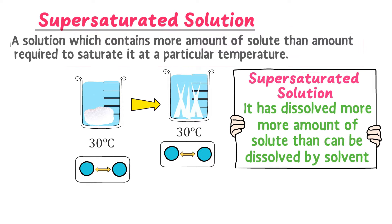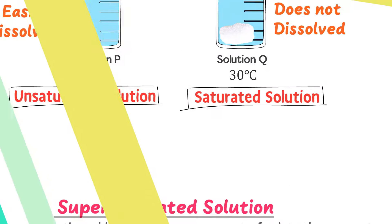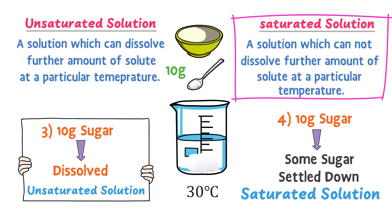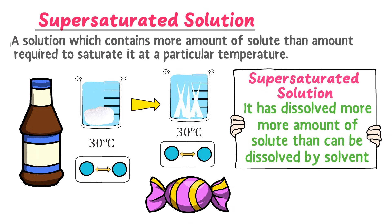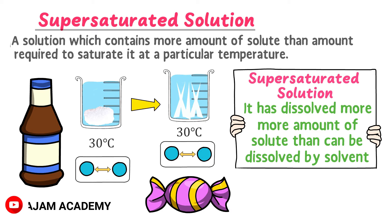The best examples of supersaturated solutions are honey and different kinds of candies. To summarize: an unsaturated solution can dissolve further solute at a particular temperature; a saturated solution cannot dissolve further solute at a particular temperature; and a supersaturated solution contains more solute than the amount required to saturate it at a particular temperature. This was all about saturated, unsaturated, and supersaturated solutions.